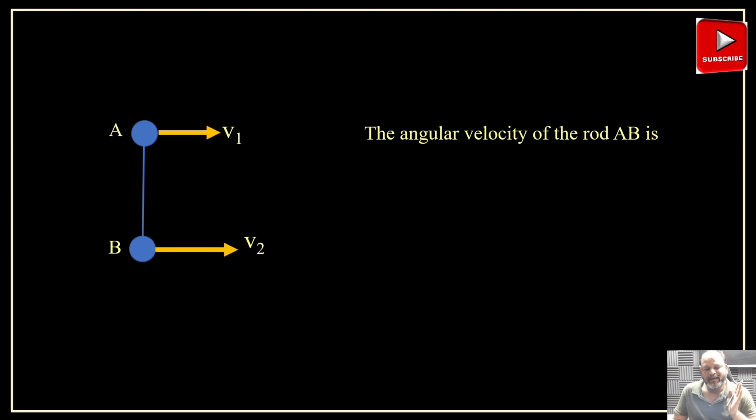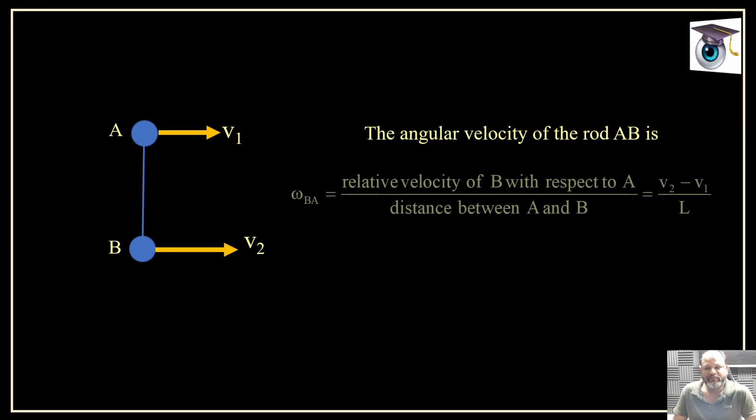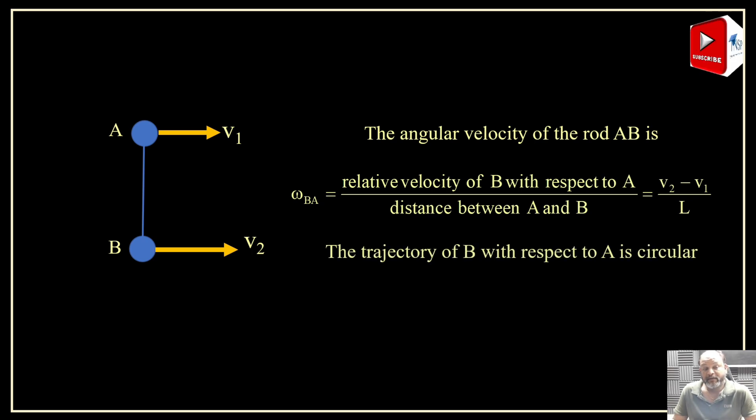We can define angular velocity of B with respect to A, that is angular velocity of the rod or cable, which is given by v relative divided by distance between them. So which is v2 minus v1 by L in this situation. Already I have told you, if A comes to rest then B will be moving in a circular path. So trajectory of B with respect to A is circular in this situation.